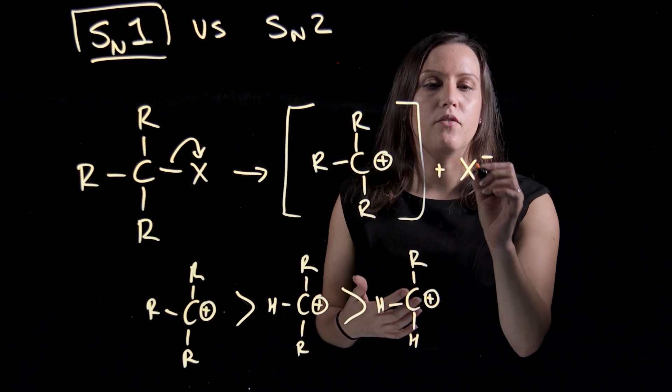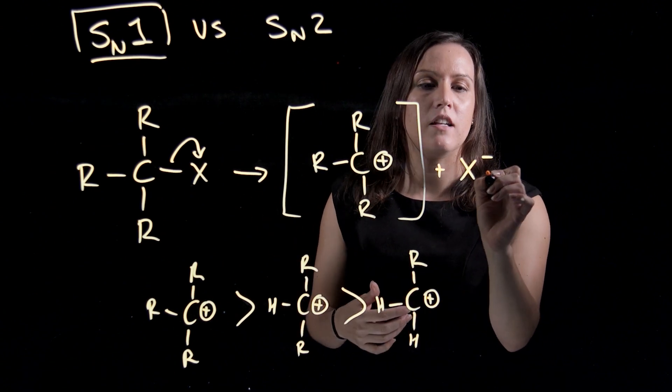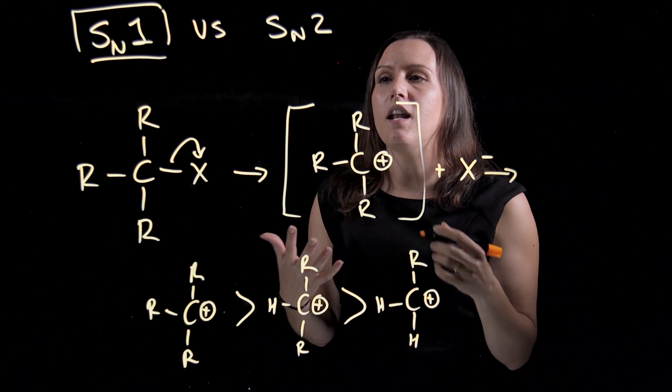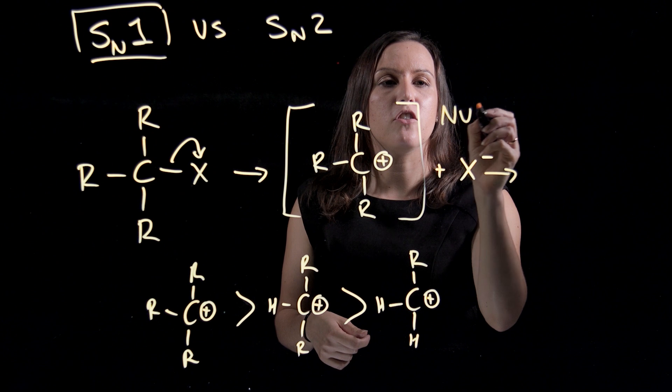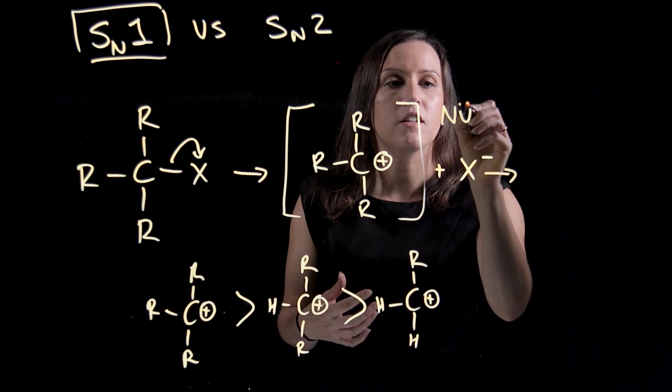So once you have this carbocation intermediate being formed, you then have your nucleophile that's in solution. And your nucleophile usually has a lone pair of electrons sitting on it.